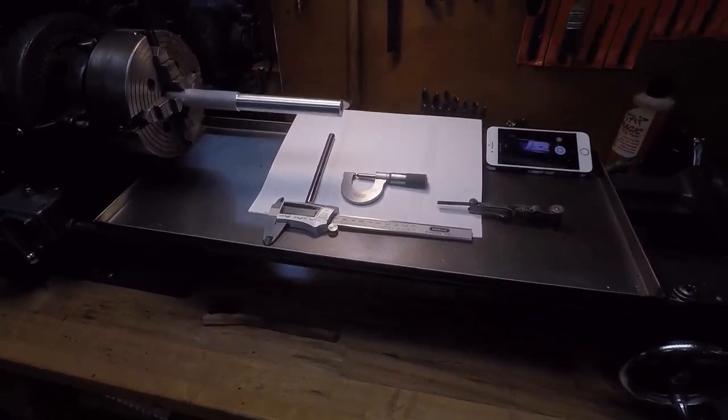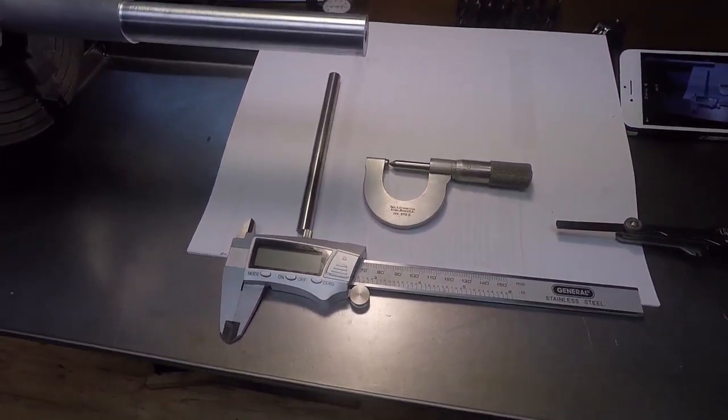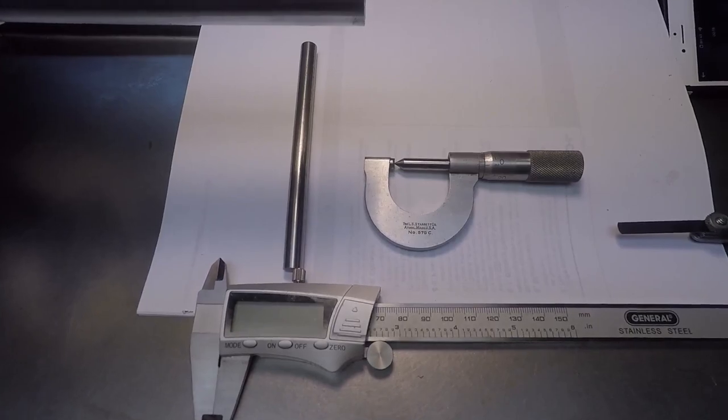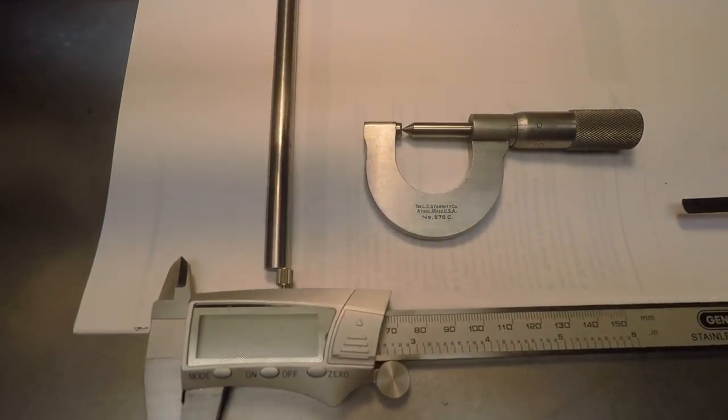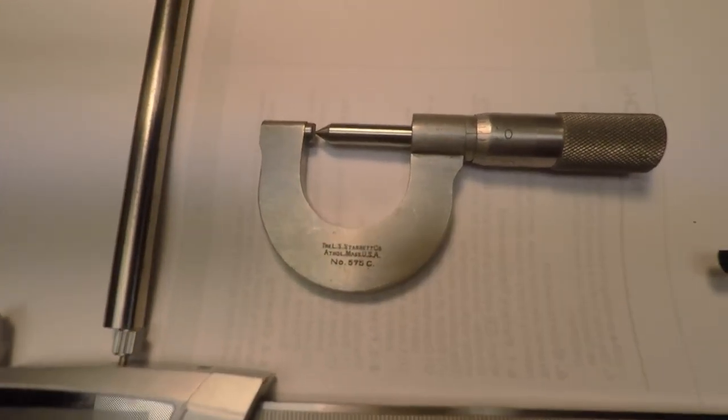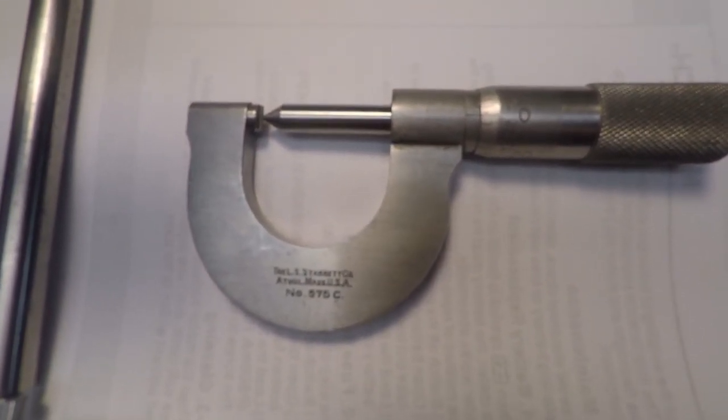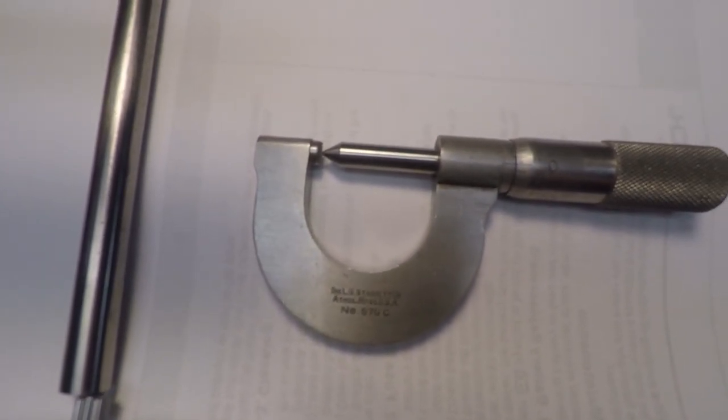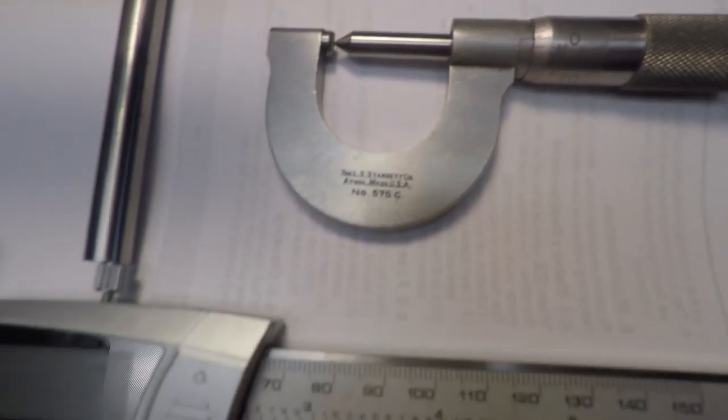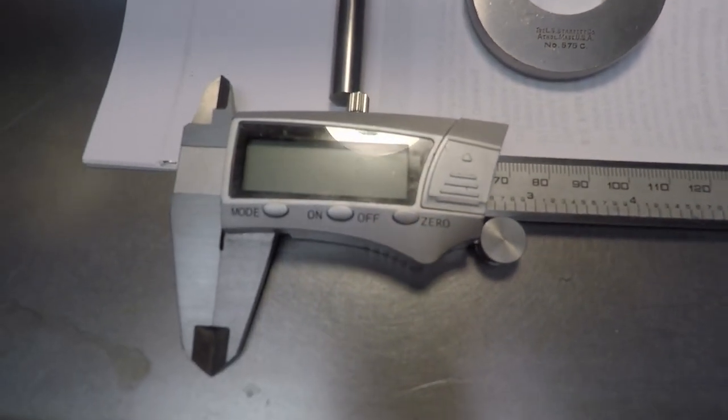I got as part of the equipment the Starrett micrometer, the 575C that you see here, and it's a zero to one inch. It is currently zeroed, it's about a half a thousandth out at zero, but for the moment we're going to call it reasonably good. I have a digital micrometer, cheap.